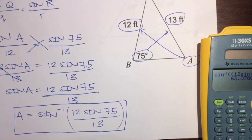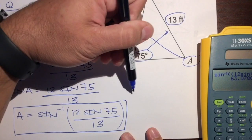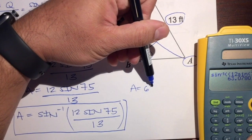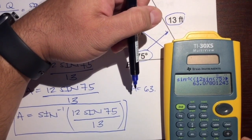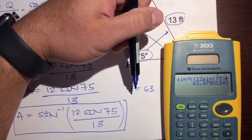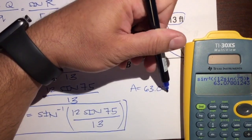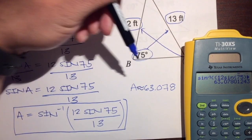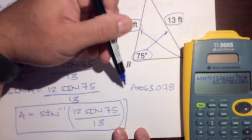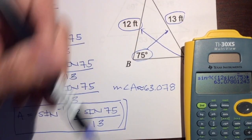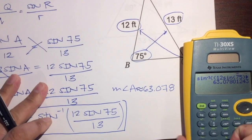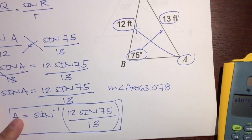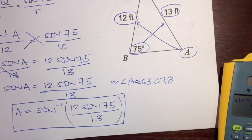So A is equal to 63. Let's round it to the nearest thousandth — 63.078.